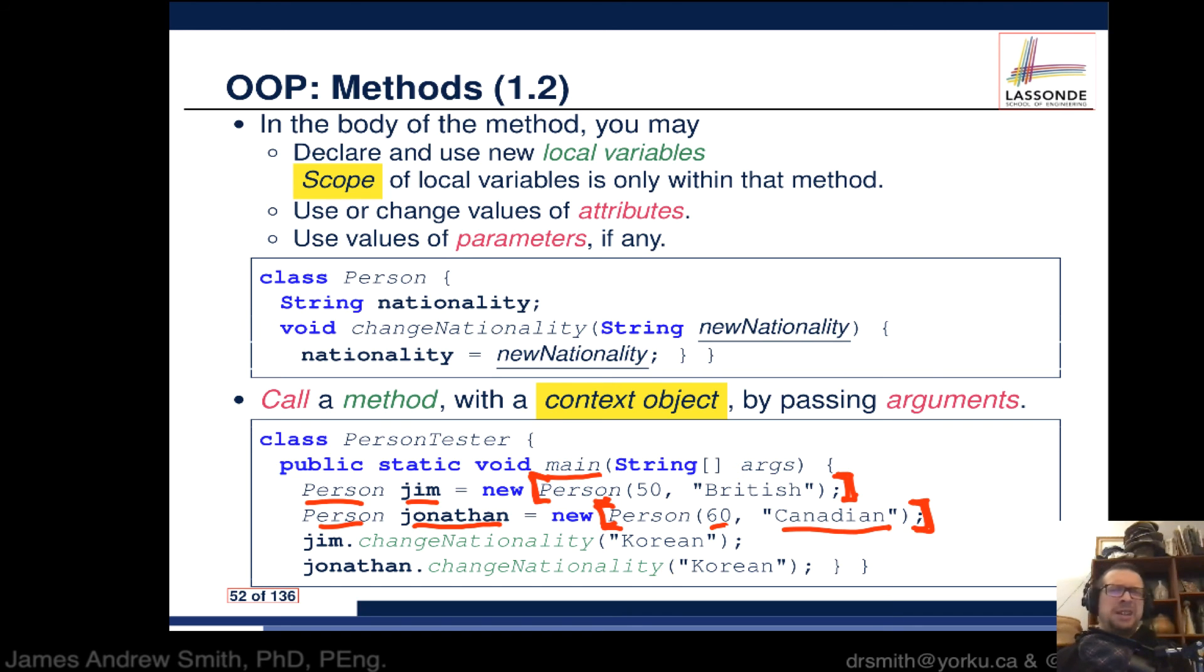Later in the main method, we want to change the nationality for jim and jonathan. We call the context object using dot notation to apply the changeNationality method defined in the class. We pass an argument inside the parentheses. Jim is renouncing his British citizenship and becoming Korean. Same with Jonathan - he's decided to move to Korea and take on Korean nationality. That's methods in a nutshell.